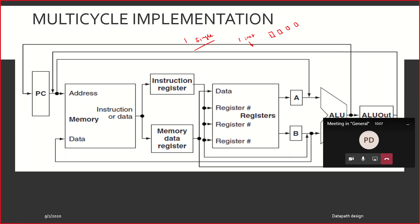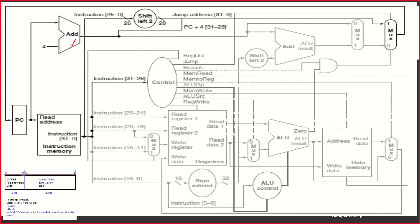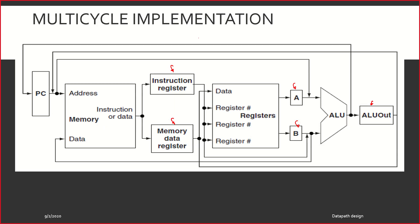Because of this change, we will have to make some changes in the way the data path has been designed, and that's what we are going to learn today. We have new inclusions: instruction register, memory data register, registers A and B, and a register called ALU out. The exclusions are the excess number of ALUs — we have been using multiple ALUs. Managing an ALU is tougher than just handling a multiplexer or a register, so that's the biggest advantage.